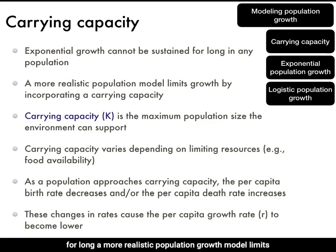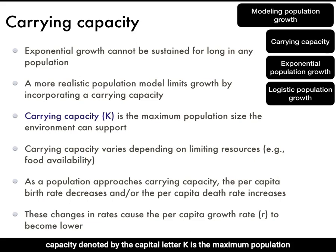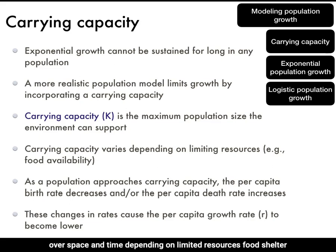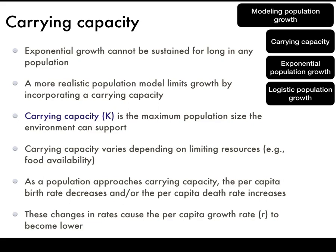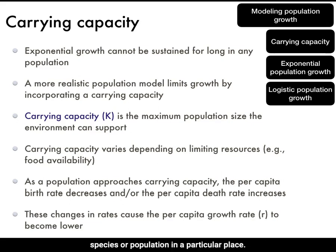A more realistic population growth model limits growth by incorporating a carrying capacity. The carrying capacity, denoted by the capital letter K, is the maximum population size the environment can support. The carrying capacity varies over space and time depending on limited resources such as food, shelter, refuge from predators, and water. We typically think about a carrying capacity for a particular species or population in a particular place.